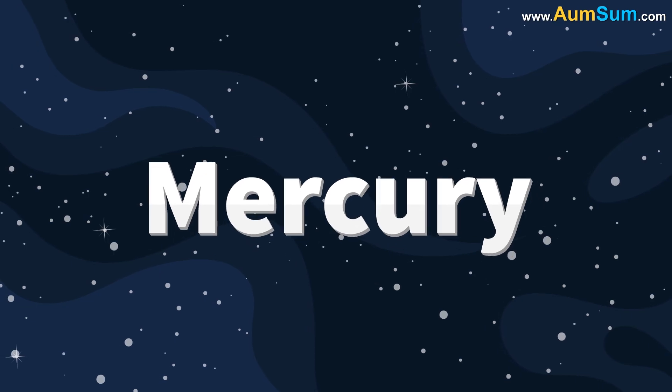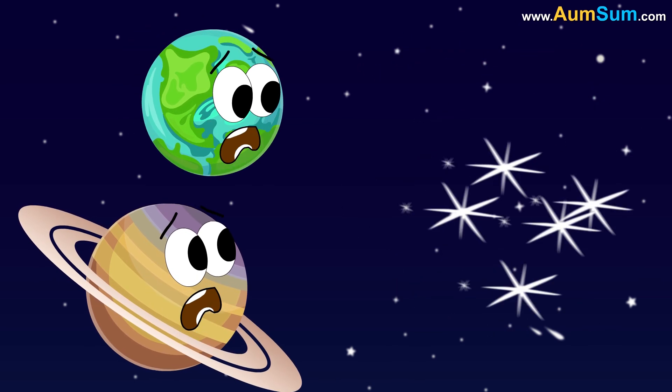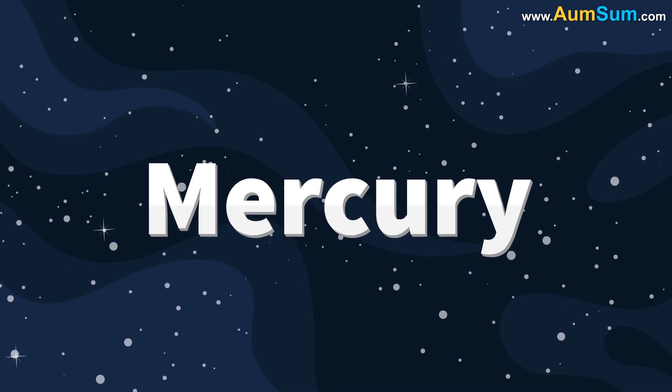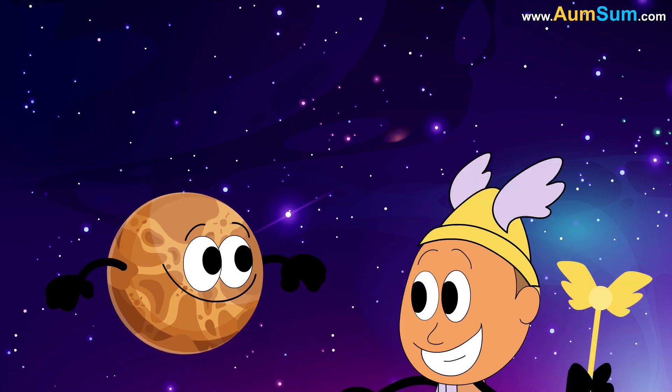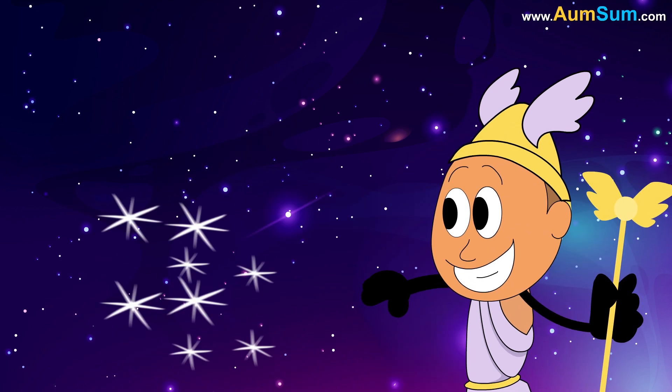Fifthly, if Mercury disappeared, the second hottest planet in our solar system after Venus would no longer be visible. Lastly, if Mercury disappeared, the Roman god Mercurius after whom Mercury is named, would surely be disappointed.